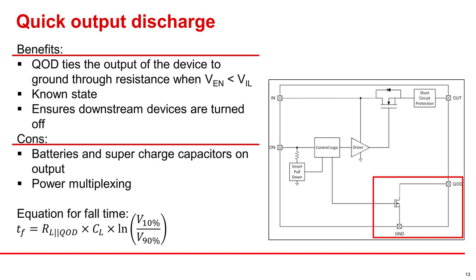The way you calculate your expected fall time for a device with QOD is by R-load in parallel with R-QOD times load capacitance times approximately two.